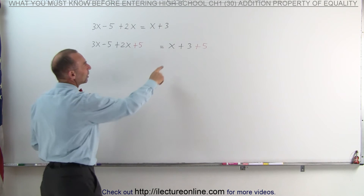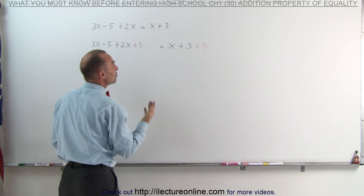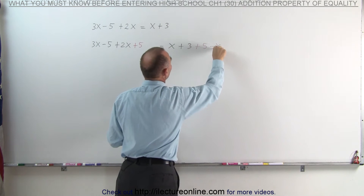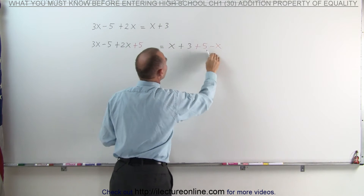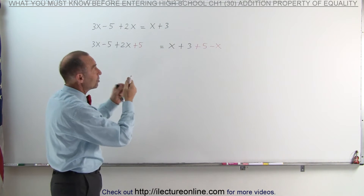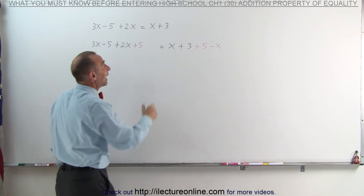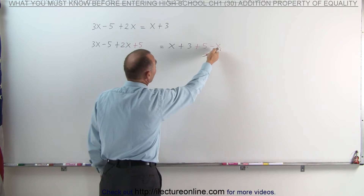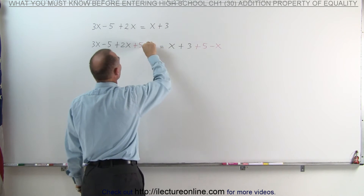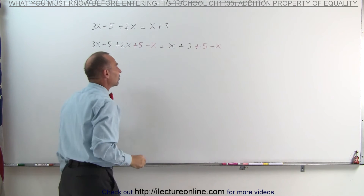I also want to get rid of the X on the right side, which means if I subtract an X on the left side, my X would be gone. But of course, the addition property of equality says if I add or subtract something from one side of the equation, I must do the same to the other side of the equation.